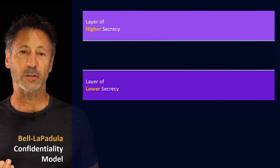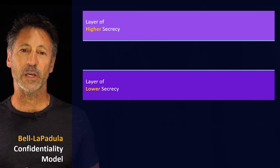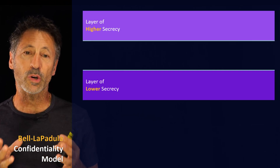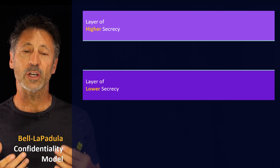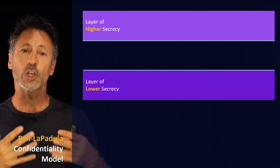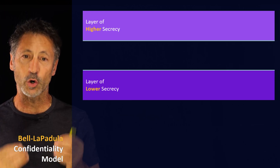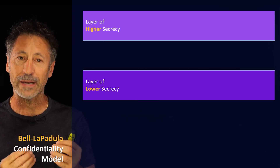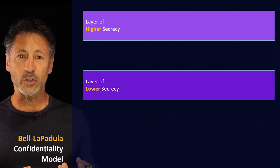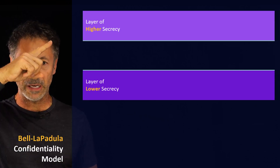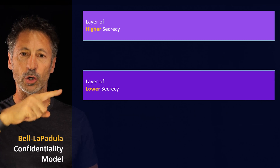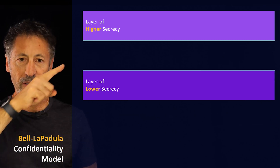The Bell-LaPadula model is considered to be a lattice-based model — meaning it's a layer-based model that requires layers of confidentiality. The Bell-LaPadula model addresses only confidentiality; it is a confidentiality-only model. Let's use an example where we have three levels of confidentiality: high, medium, and low. Let's say we have been placed in the medium layer.